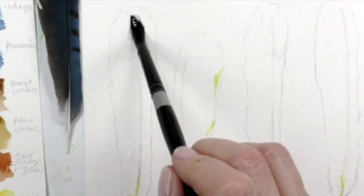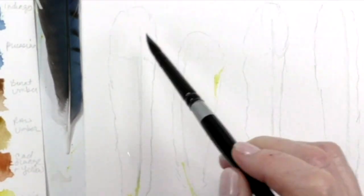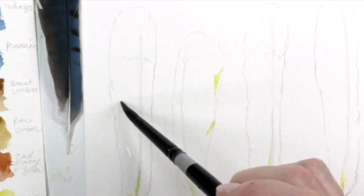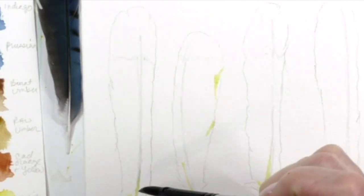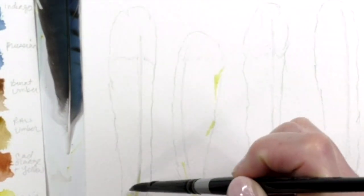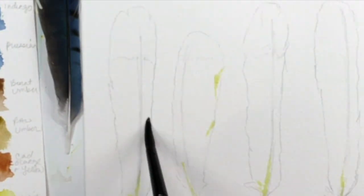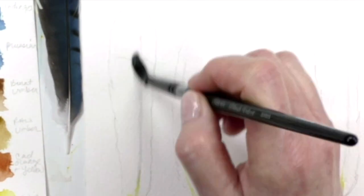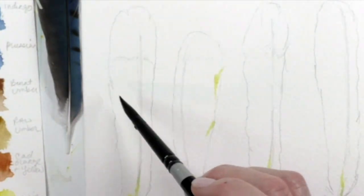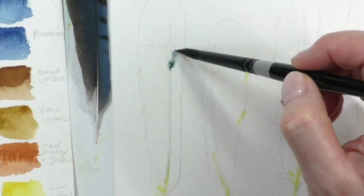Okay, here we go. Applying water on Arches cold press watercolor paper. I sketched in the feathers as you can see and now I'm applying water just where I want the paint to go. This is the wet on wet technique that I'm going to be doing.